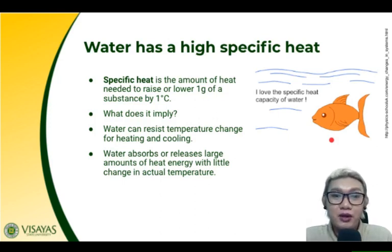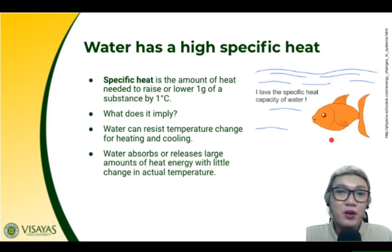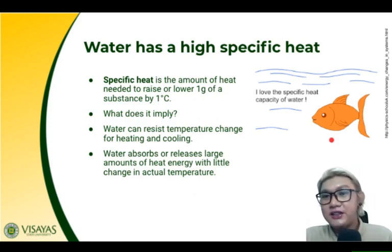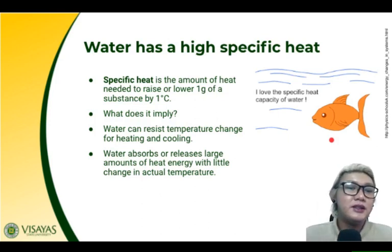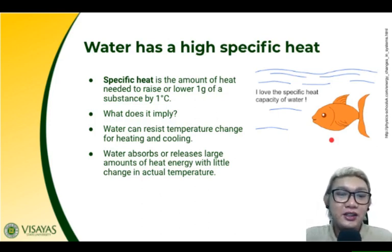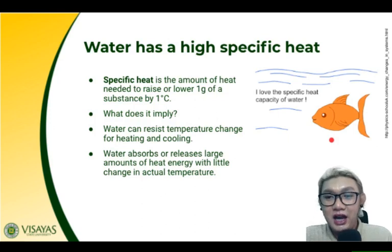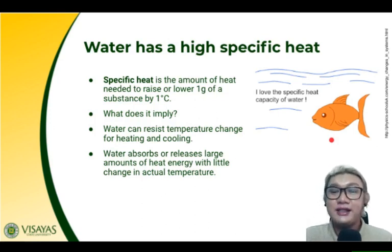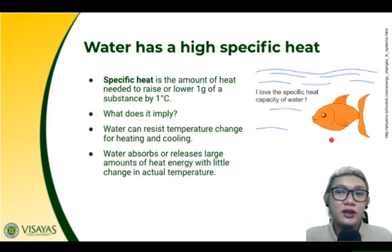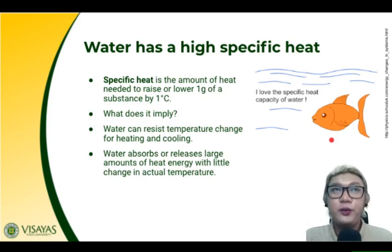It takes a lot of heat to raise body temperature by one degree Celsius. If body temperature reaches 40°C, convulsions can occur. So water absorbs or releases large amounts of heat energy with little change in actual temperature. This is important for organisms living in aquatic environments, as well as other organisms, because we are made up of water. The high specific heat of water helps us maintain homeostasis — both with our environment and within ourselves.